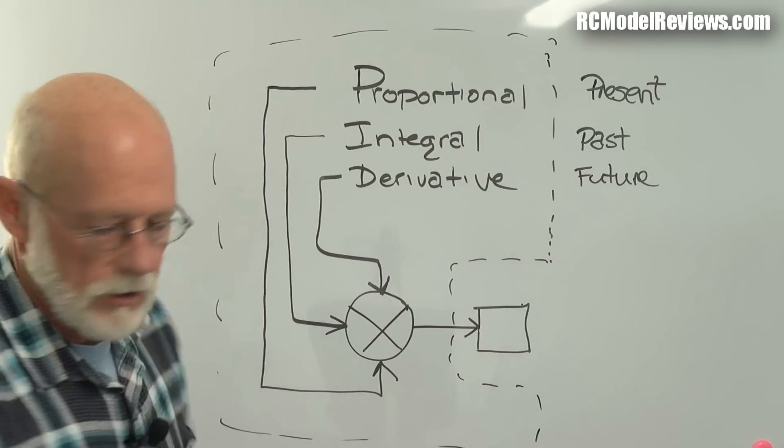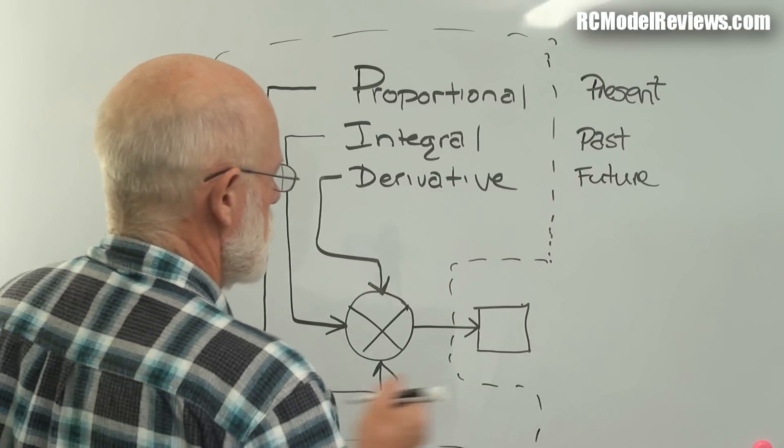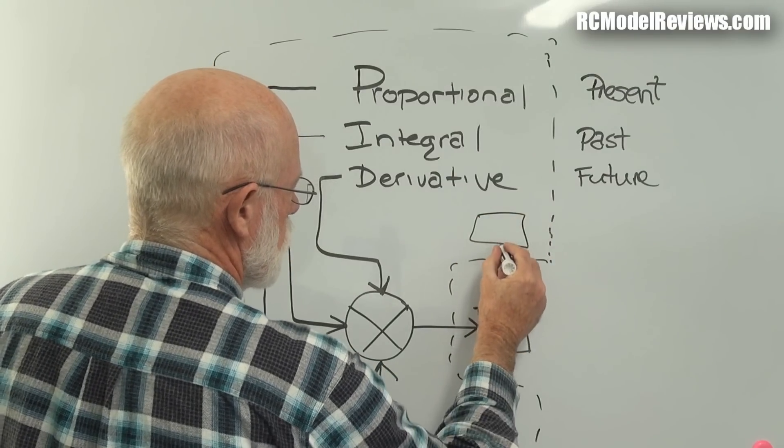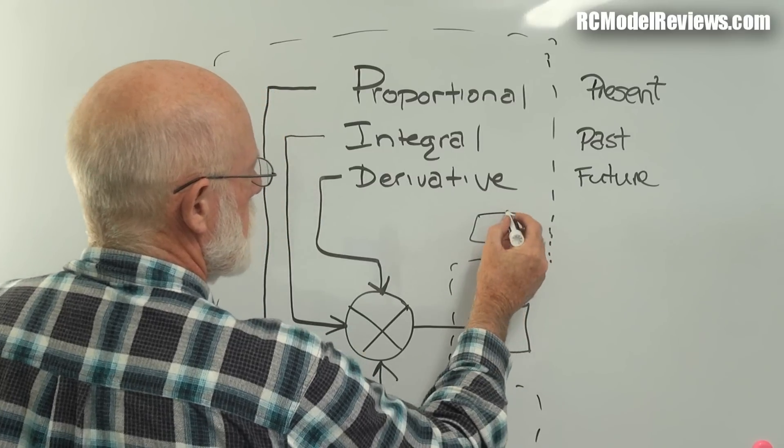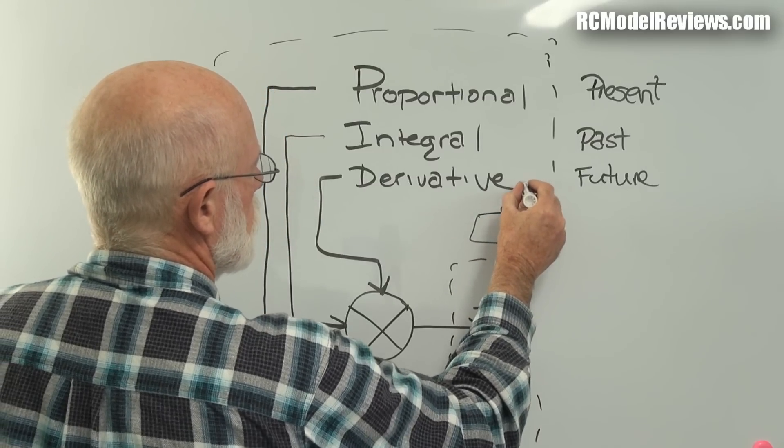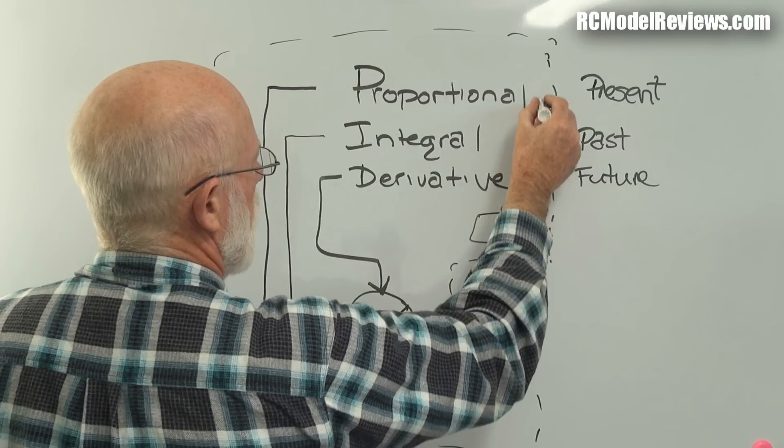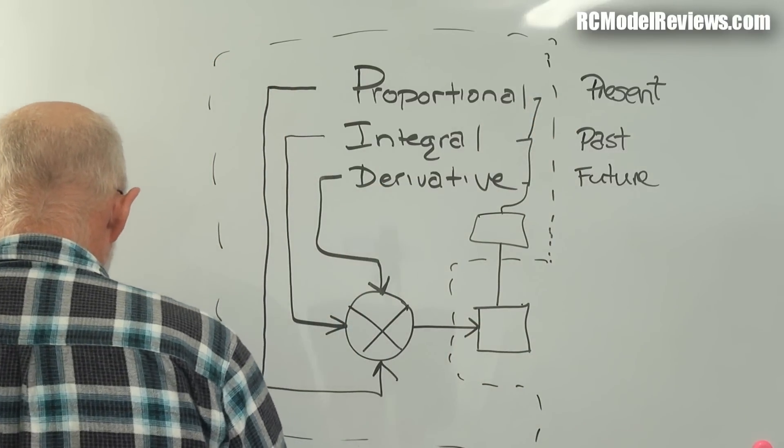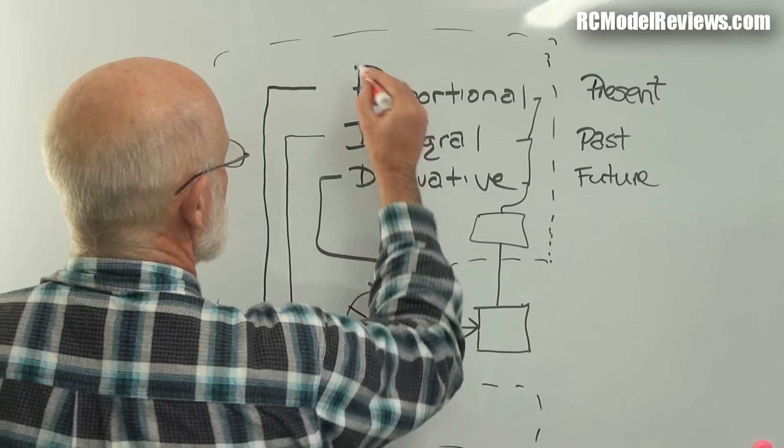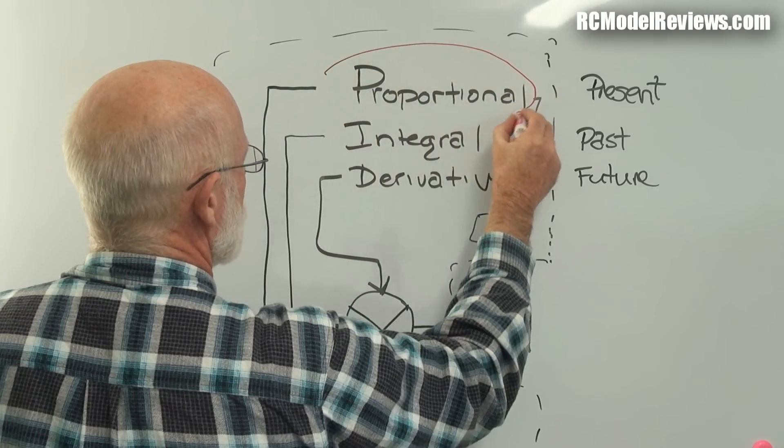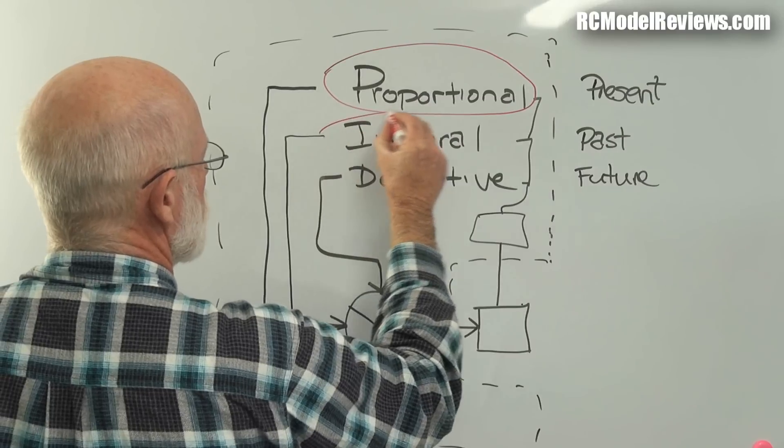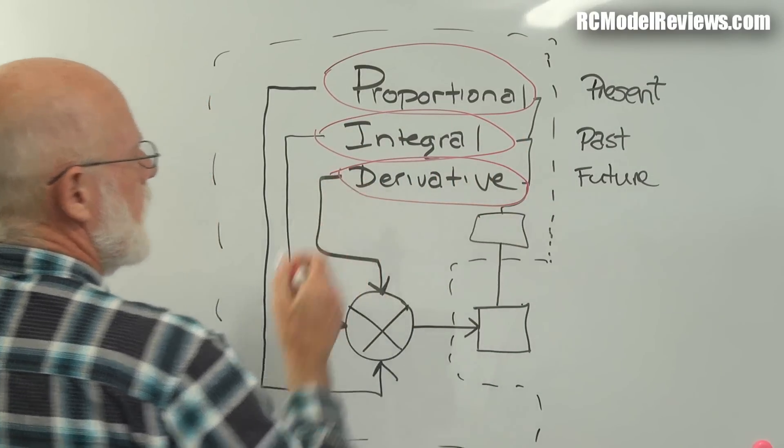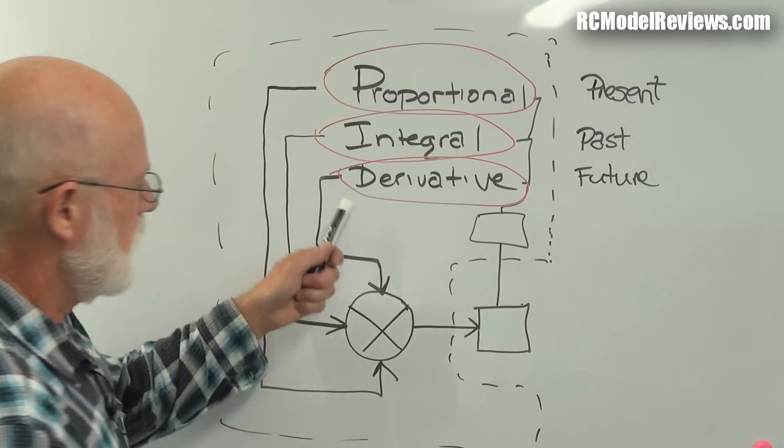And also in the flight controller there is another block which is the sensor, and the sensor provides the information that goes off to the derivative, the integral, and the proportional. I can draw some lines around these to show you what I am talking about. These are actually separate bits of stuff, they're actually software inside the flight controller that handle these particular operations. So what we have here is a feedback loop.